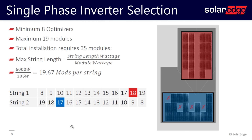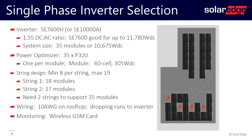To review what we selected: a 7.6 kilowatt inverter with a maximum DC to AC ratio allowed of 155%. The system size was 10,675 watts. We decided to use two strings — one of 18 modules and one of 17 modules. The last thing to consider is the wiring from the array down to the inverter.